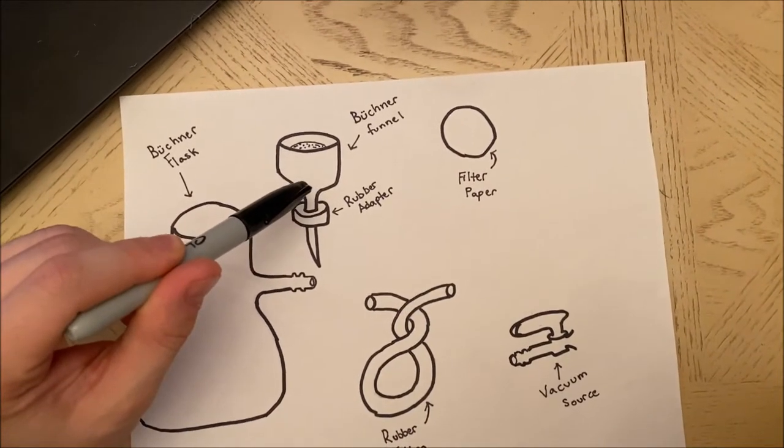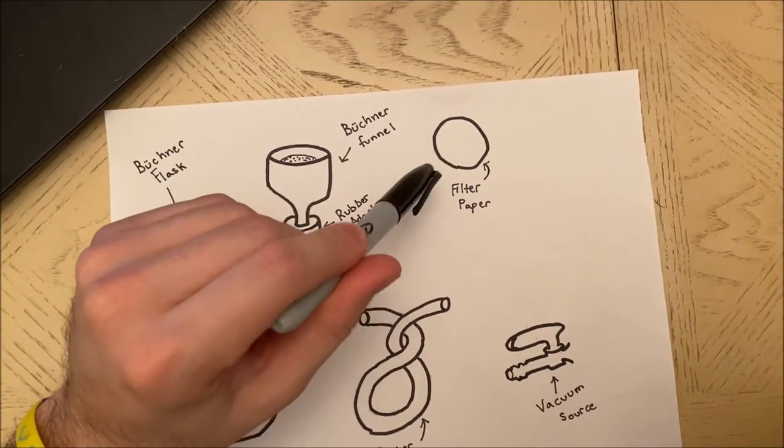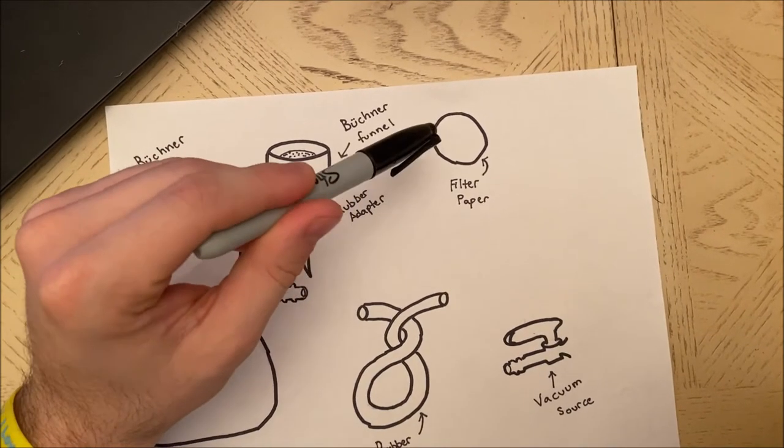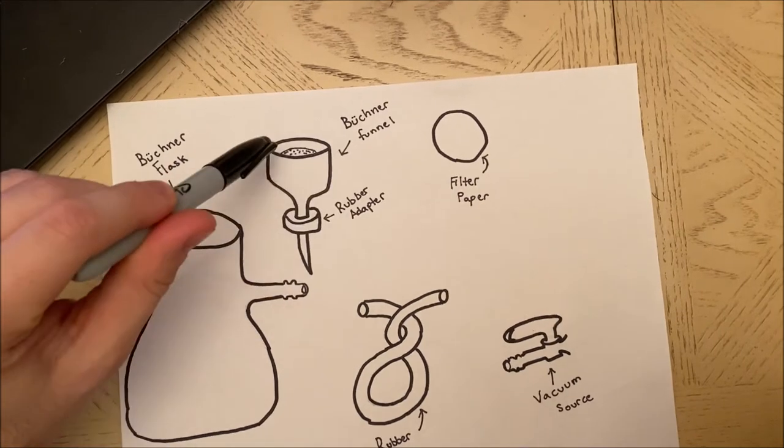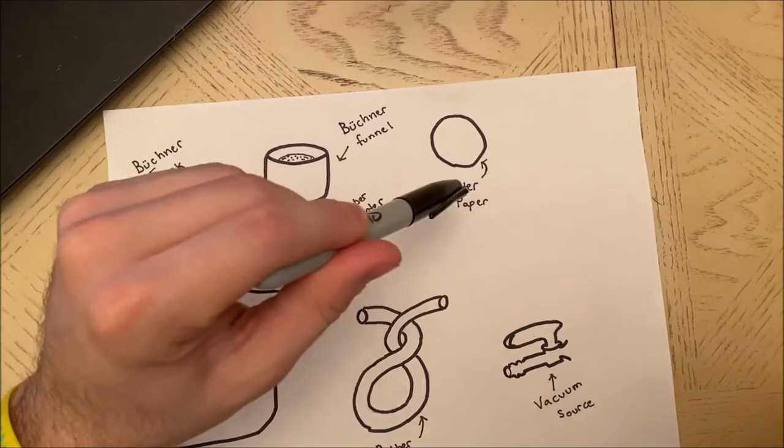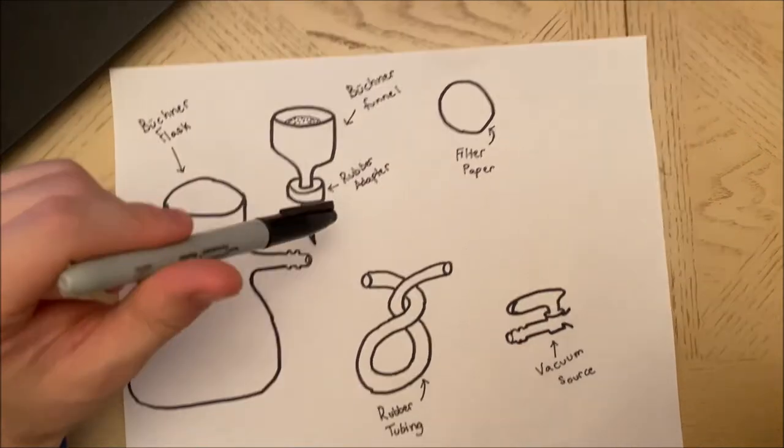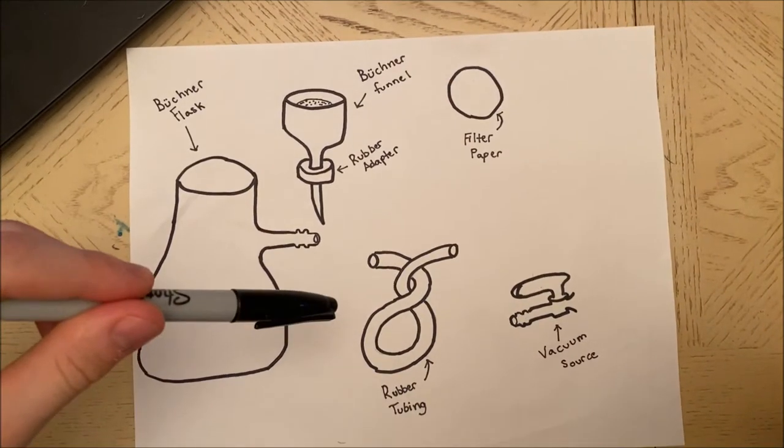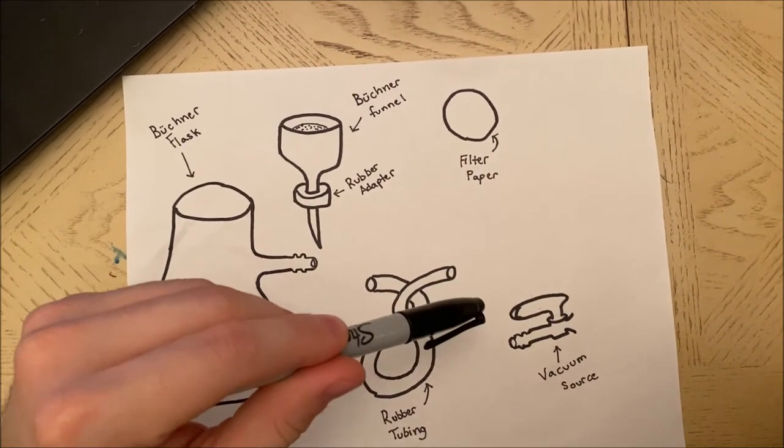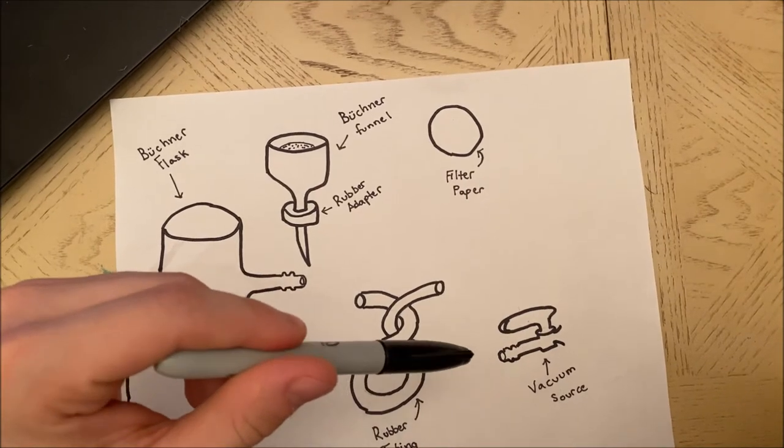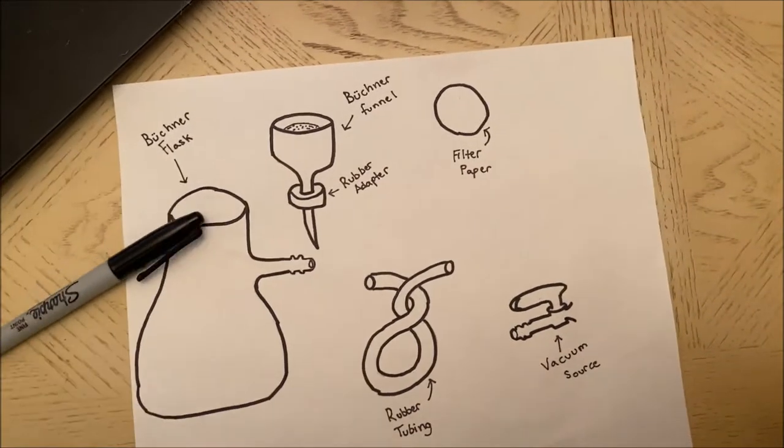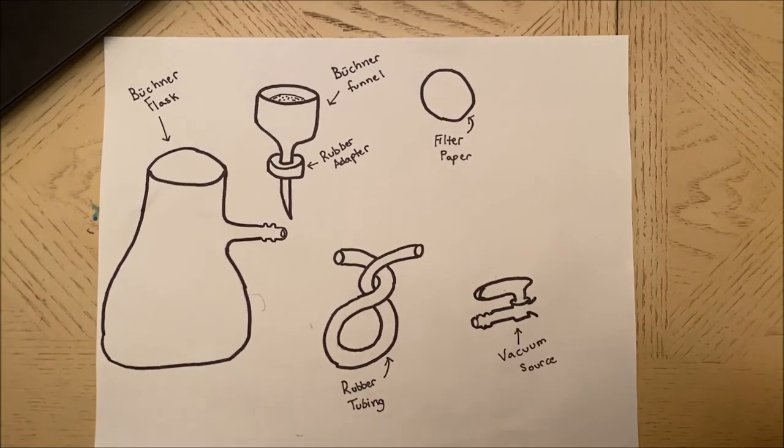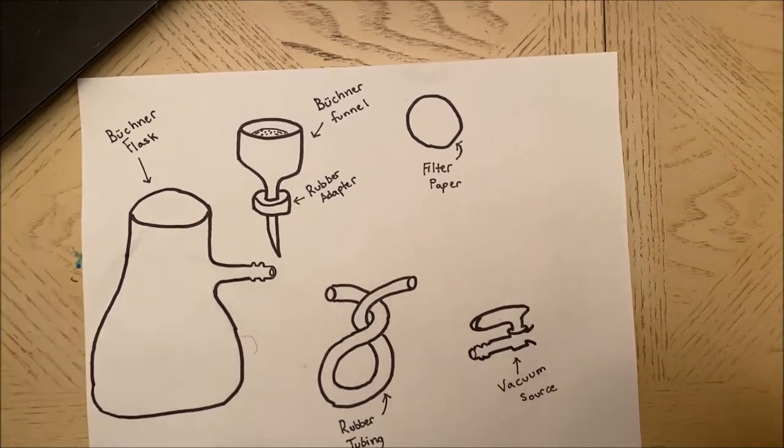We're going to need filter paper. We need to make sure that the filter paper is large enough to cover all the holes in the Buchner funnel but small enough to fit inside. We're going to need rubber tubing and then a vacuum source, usually this is something in the lab like in the wall that we can use.